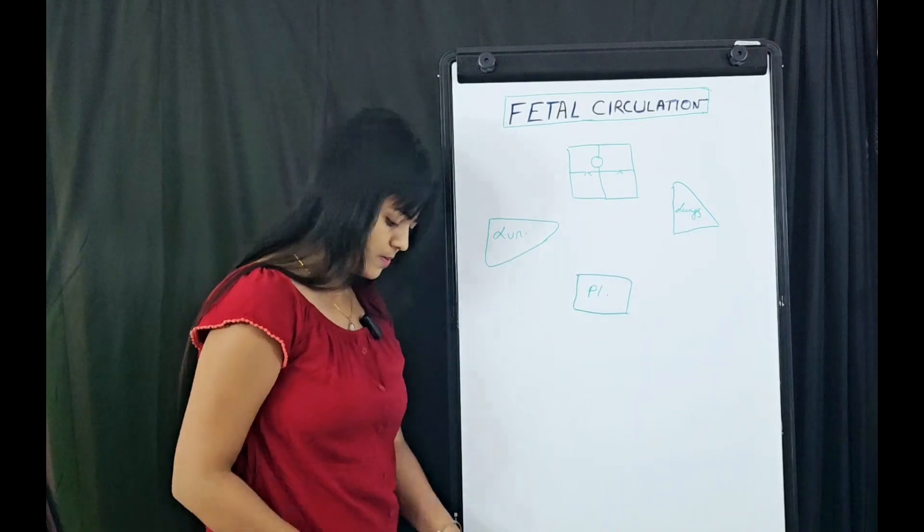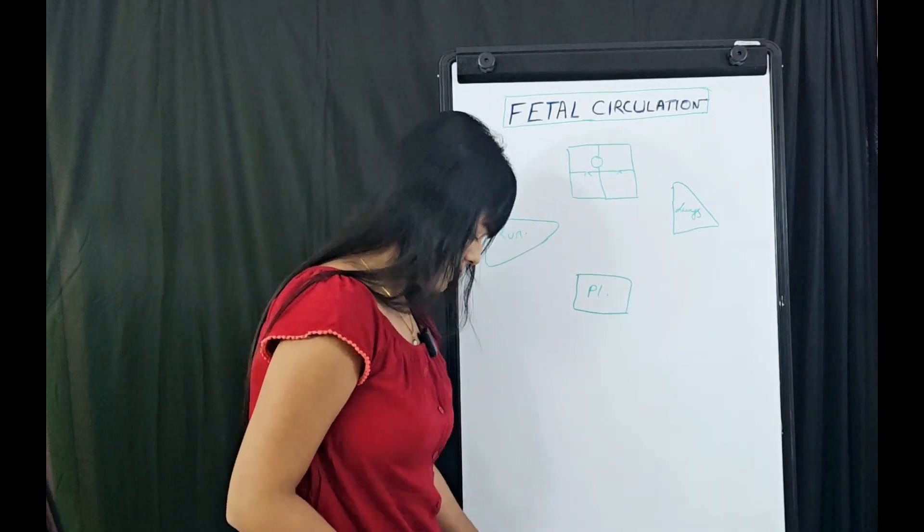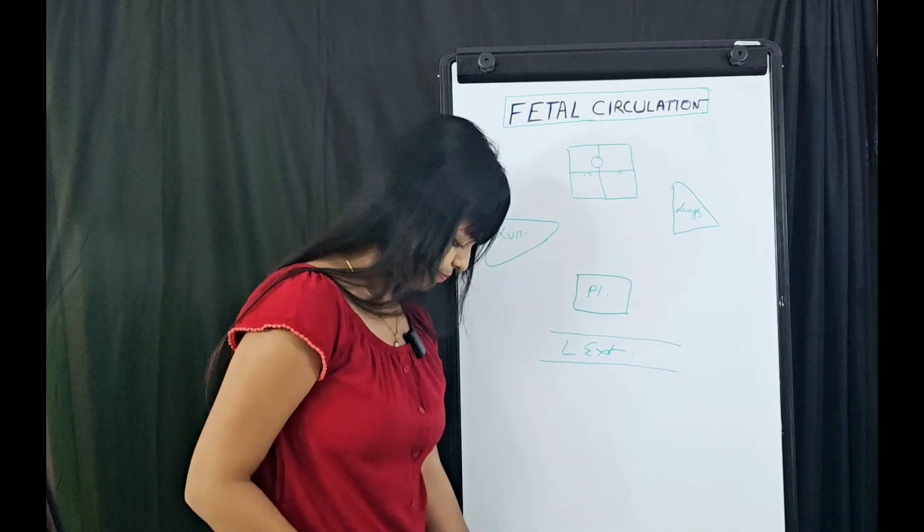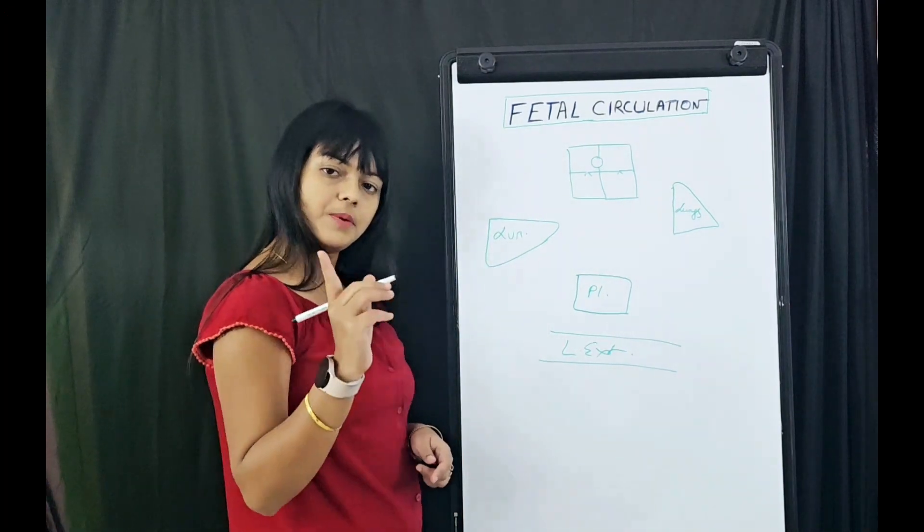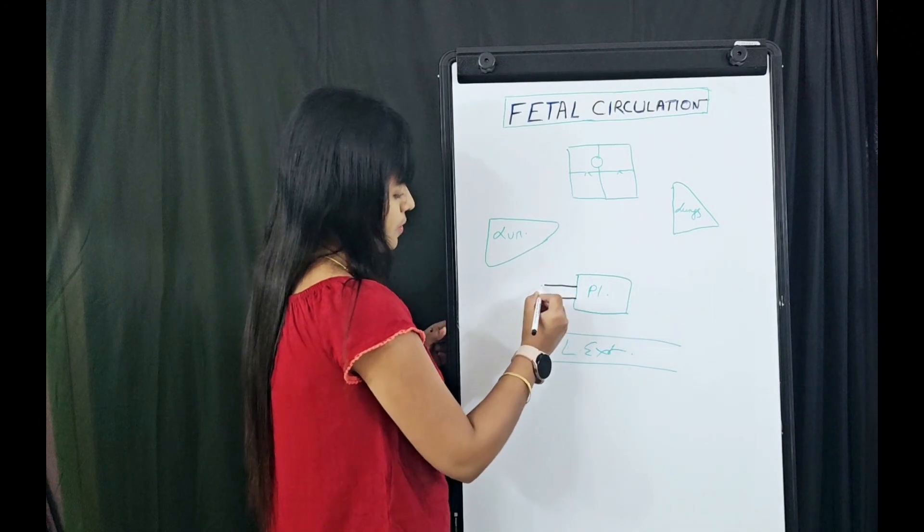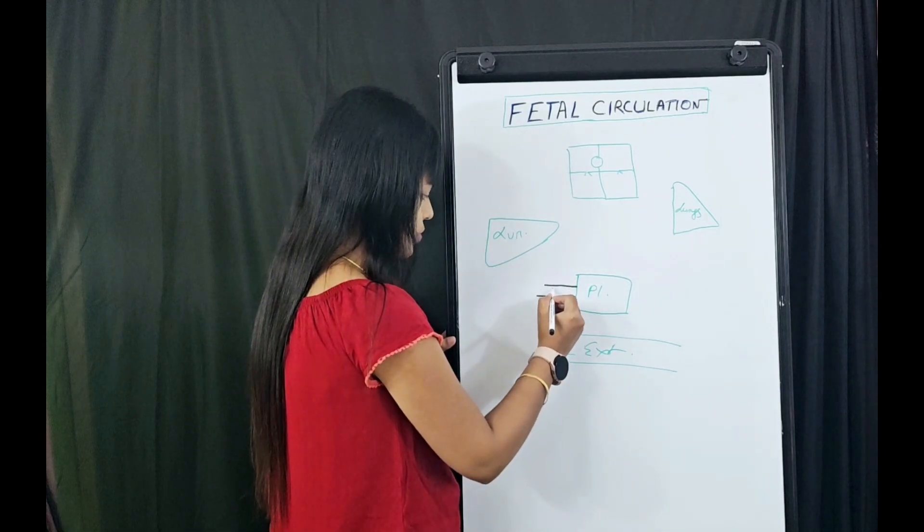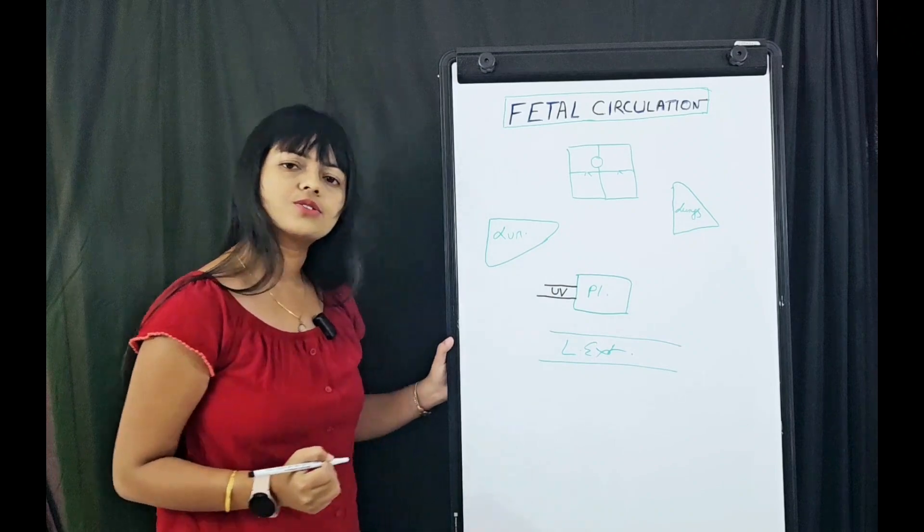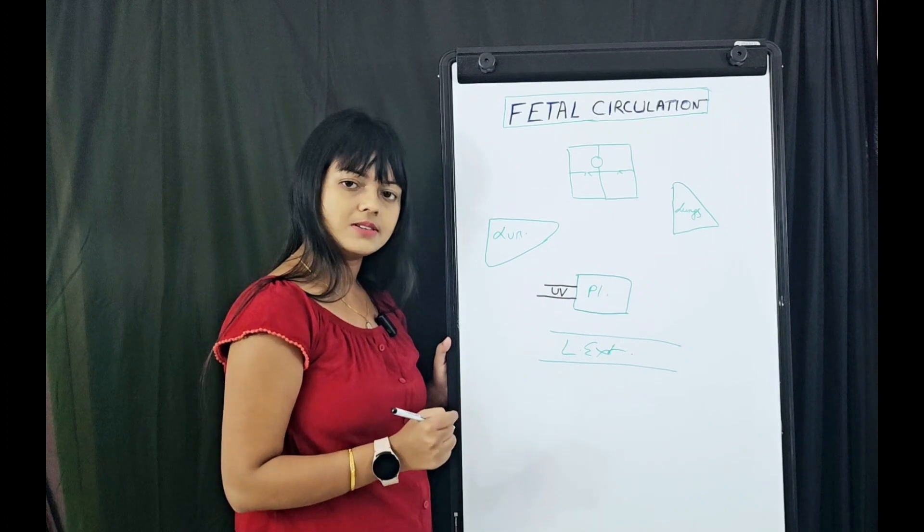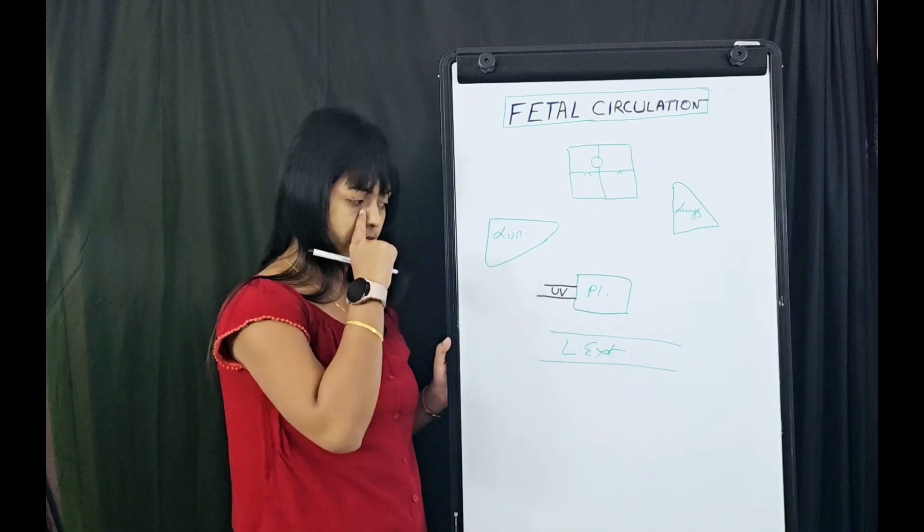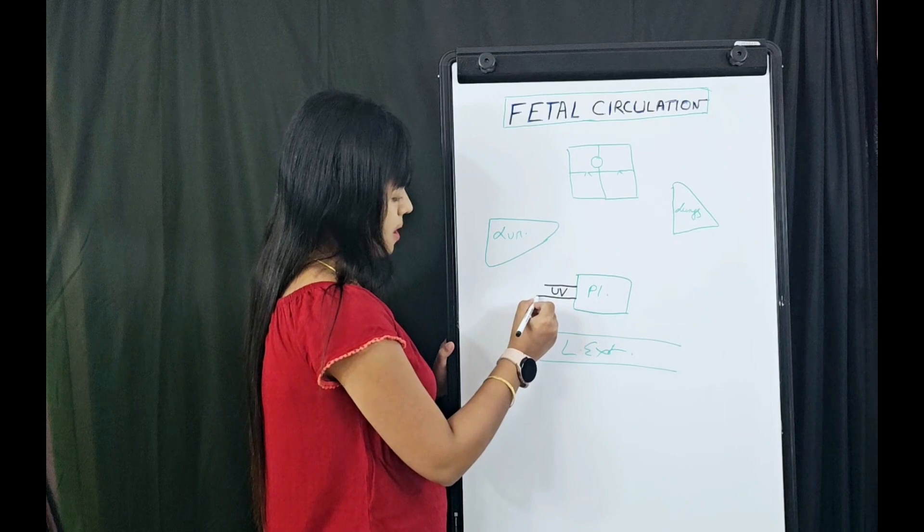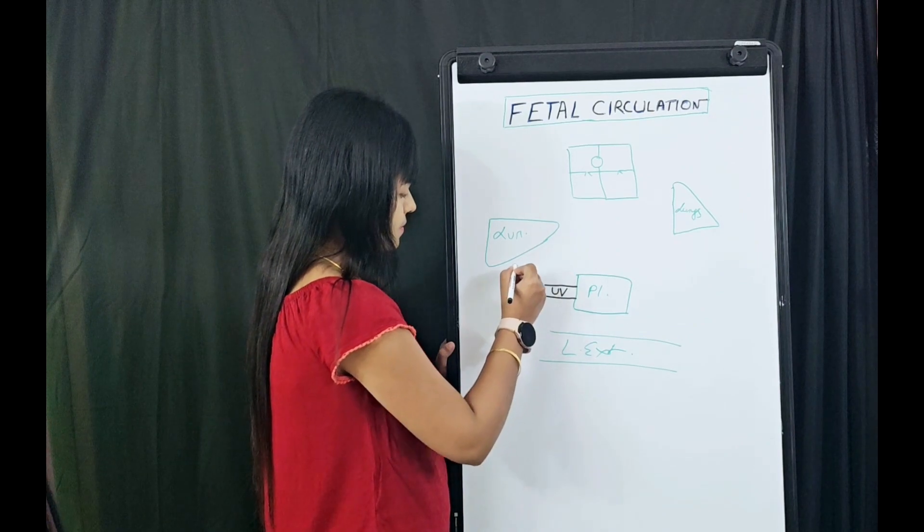One last important thing: this is the lower extremities. Let's start from placenta. The oxygenated blood comes from placenta through umbilical vein, not umbilical artery, mind you. What is the pO2 of this blood in umbilical vein? It is 30 to 35. This is the most oxygenated blood the fetus is getting.